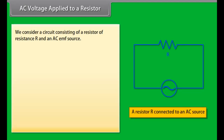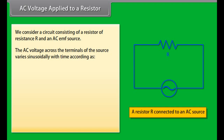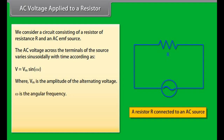Difference between alternating and direct current: A.C. cannot produce chemical effects of current, but D.C. can produce chemical effects such as electroplating or electrolysis. A.C. can be stepped up or stepped down by transformers, but a transformer is of no use for D.C. A.C. can be converted into D.C. by using electronic rectifiers, whereas D.C. can be converted into A.C. by inverters.